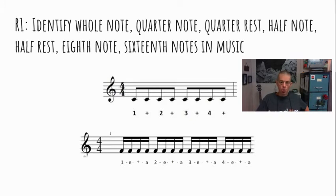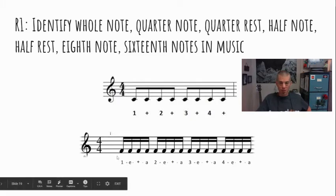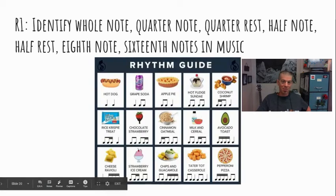So if I were to count that, it would sound like this: One-e-and-a, two-e-and-a, three-e-and-a, four-e-and-a, one and two and three and four, one, two, three, four. One and two and three and four and one-e-and-a, two-e-and-a, three-e-and-a, four-e-and-a. All right? If that didn't make sense, you don't have to worry because we're actually going to use food to help us practice these different rhythms. You ready?